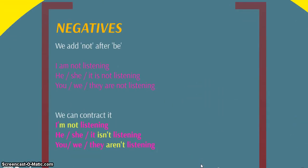In the negatives we're going to use the auxiliary and then the word not. I am not listening, he, she, it is not listening, you, we, they are not listening. And of course we can contract it. We usually use it this way. I'm not listening, he, she, it isn't listening or you, we, they aren't listening.